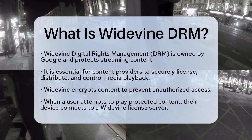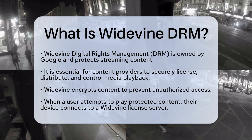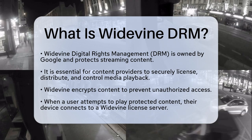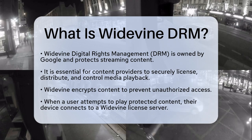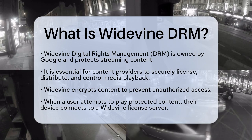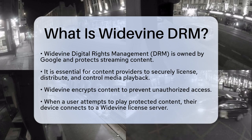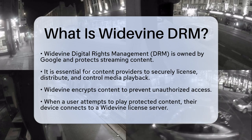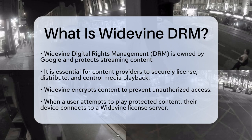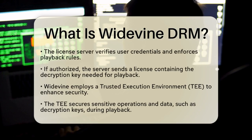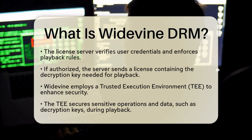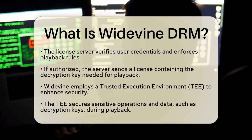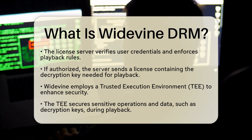Widevine Digital Rights Management works by encrypting content, making it inaccessible without proper authorization. When a user tries to play protected content, their device connects to a Widevine license server to get a decryption key. This server checks the user's credentials and enforces playback rules,